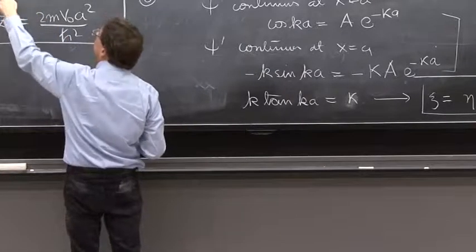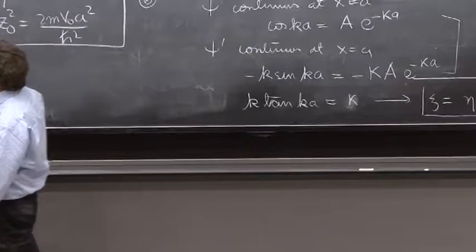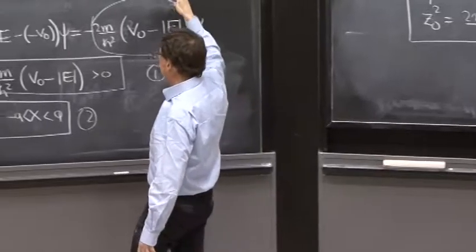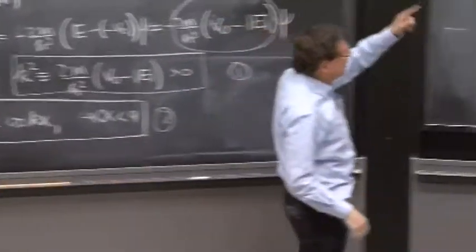If you know either η or ψ, you know κ or k. And if you know either k or κ, since you know v₀, you will know the energy.